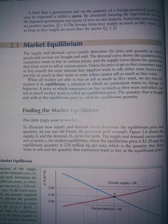Microeconomics, Part 2.3: Market Equilibrium. The supply and demand curves jointly determine the price and quantity at which goods and services are bought and sold. The demand curve shows the quantities that consumers want to buy at various prices, and the supply curve shows the quantities that firms want to sell at various prices.